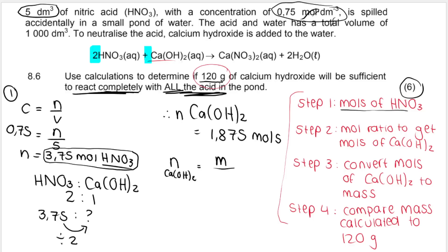Remember moles we just calculated 1.875. The mass is what I'm looking for. Big M comes from the periodic table. You look at calcium. We've got two oxygens and two hydrogens. It's 74 in total. That means that the mass that is required to react all of the acid in the pond is 138.75 grams.